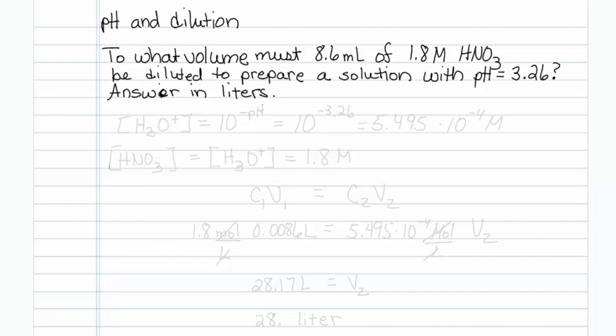This is how to work with pH and dilution. To what volume must 8.6 mL of 1.8 molar nitric acid be diluted to prepare a solution with pH equal to 3.26? Answer in liters.